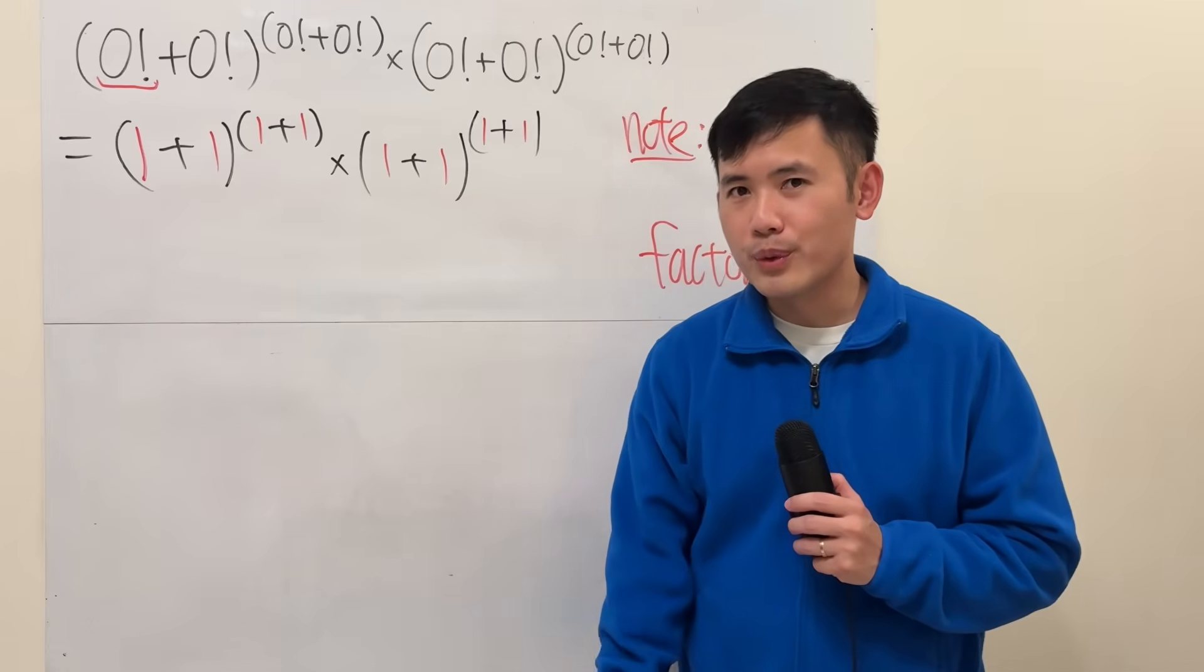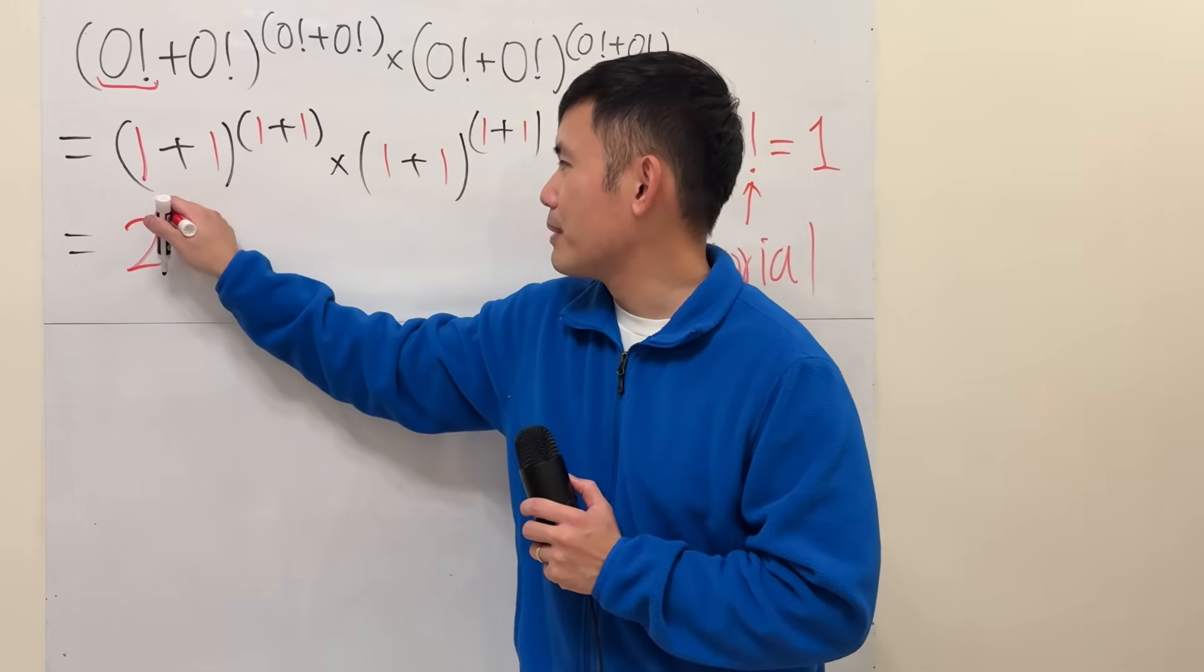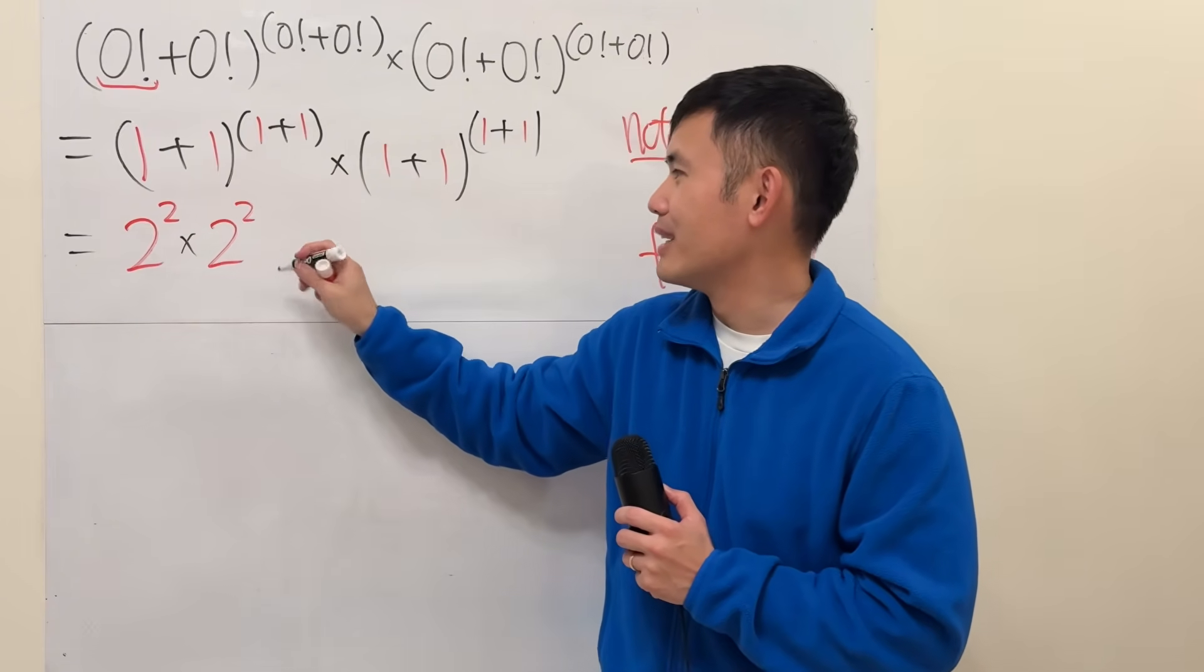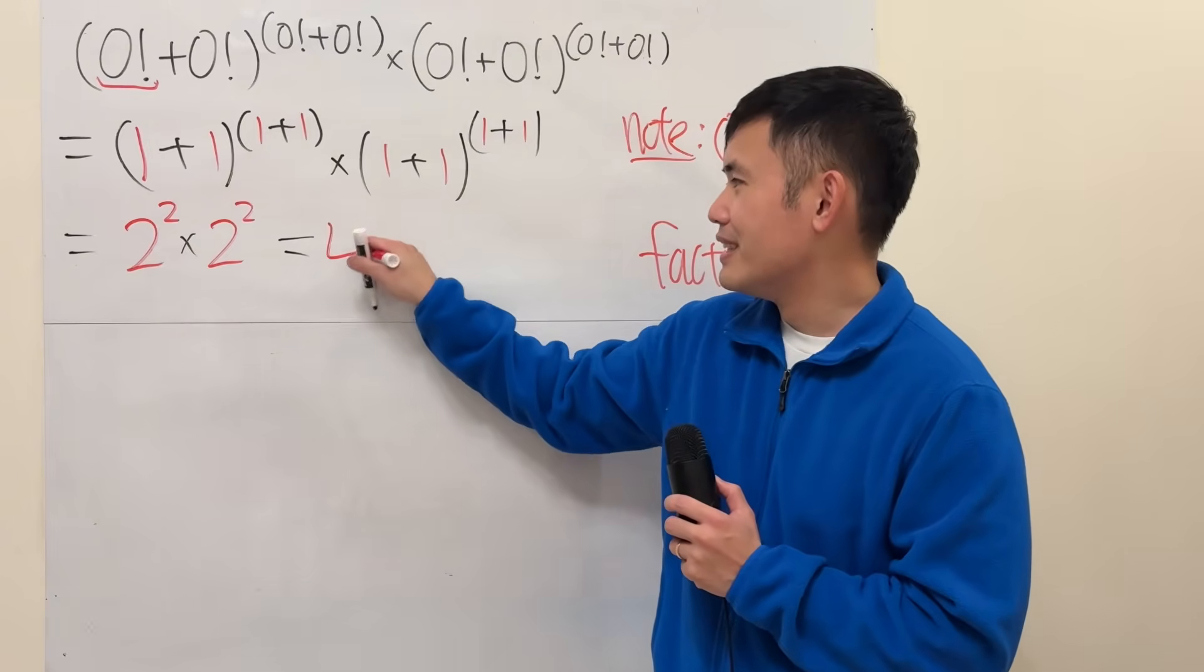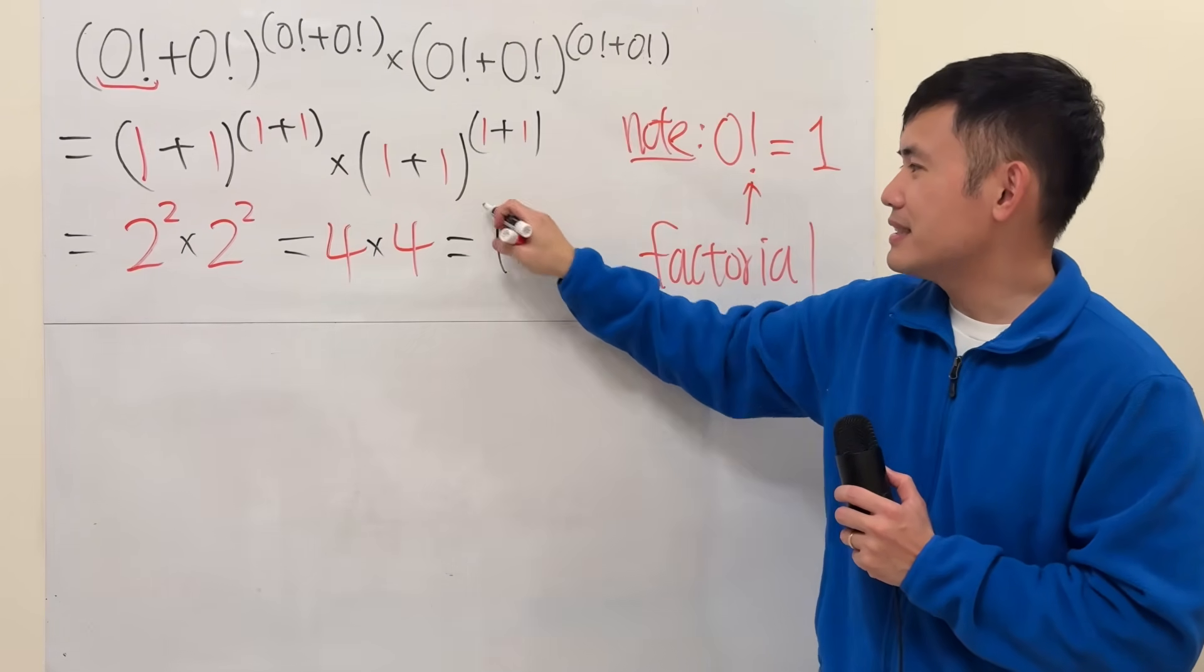One plus one is equal to two, so we have two to the second power times two to the second power. Two to the second power means two times two, so we have four times another four. All in all, we get 16.